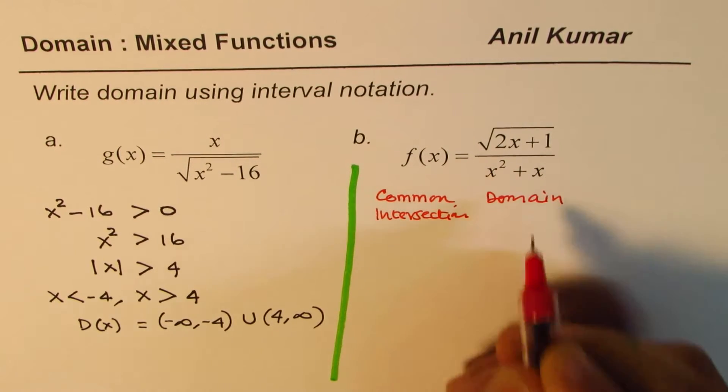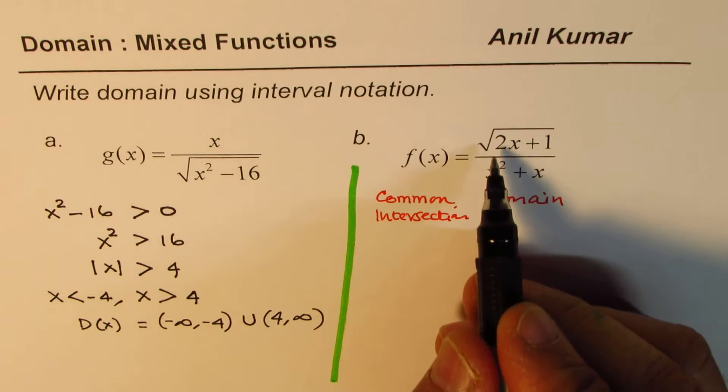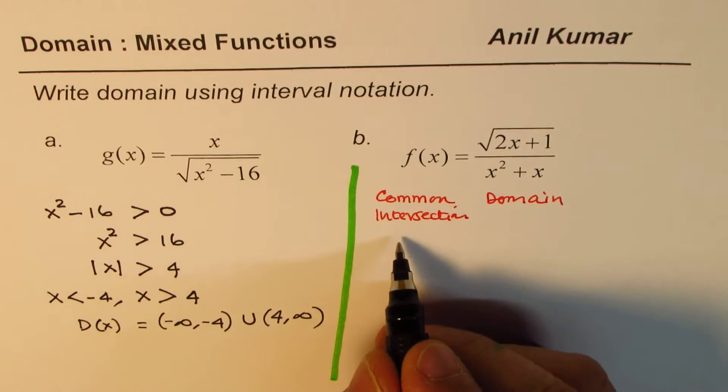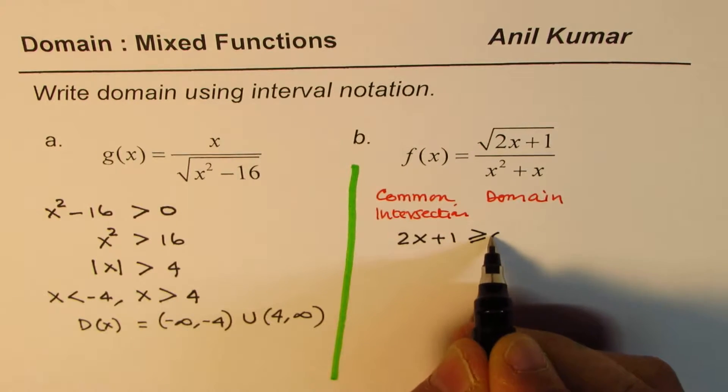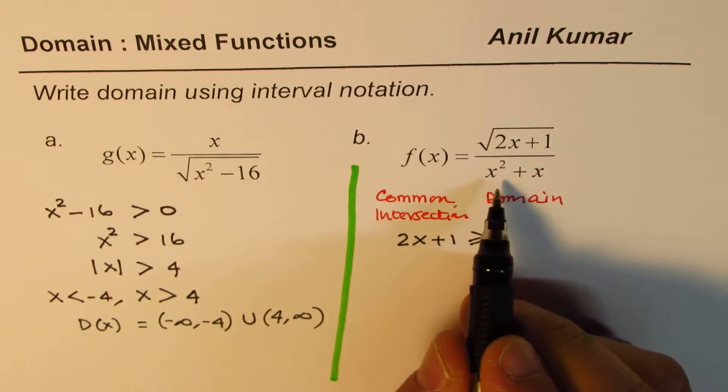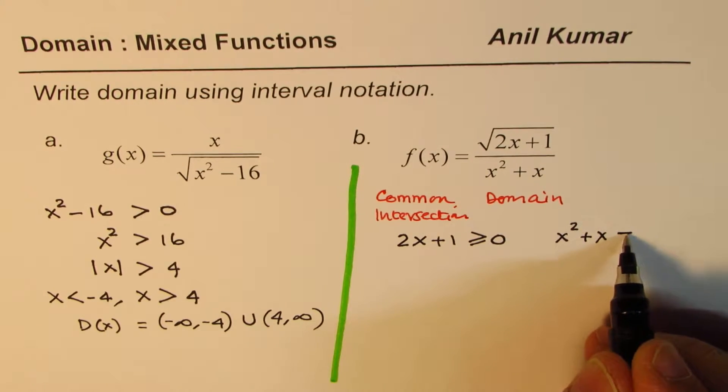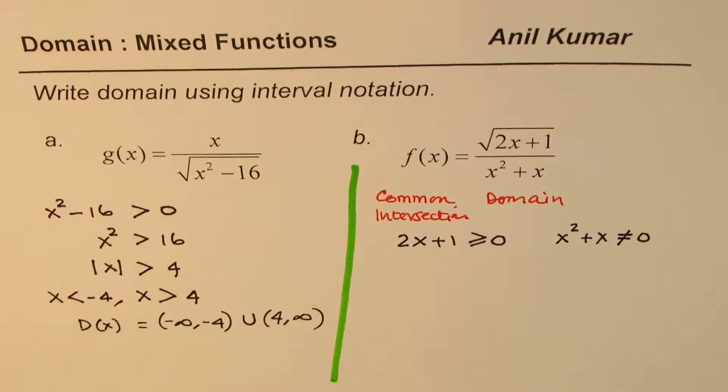The domain for both numerator and denominator for the function to have valid values for the independent variable x. What we are looking for here is that 2x plus 1, which is the radicand, should be non-negative. So you need to solve for 2x plus 1 should be greater than or equal to zero. And the other one is x squared plus x, which is in the denominator, is not equal to 0.